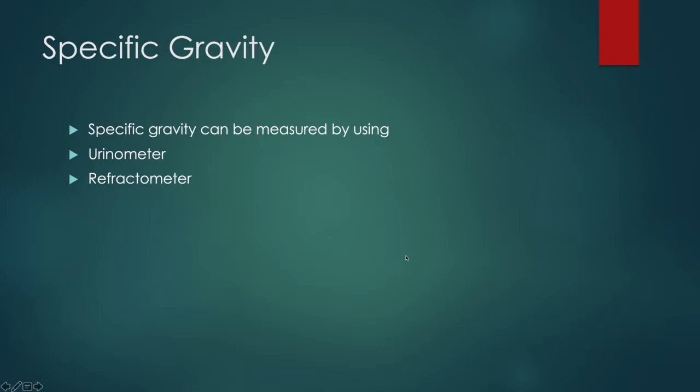Welcome to our medical diagnostic class at Good Samaritan School online classes for class 11 medical diagnostic students. We have already started with the topic of physical examination of urine, and only two parts are left: specific gravity and pH measurement in urine. Specific gravity can be measured by two ways — with the help of a urinometer and with the help of a refractometer.